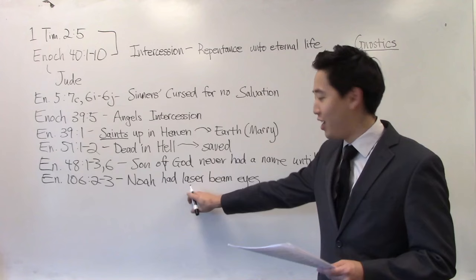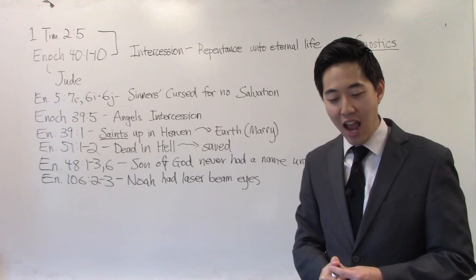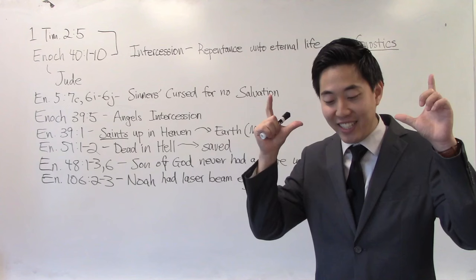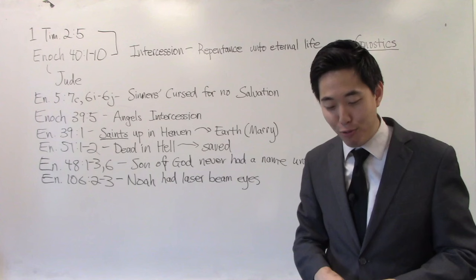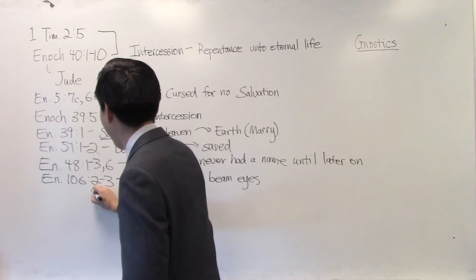His body, so when Noah was born, they're describing him in this way. His body was white as snow and red as the blooming of a rose and the hair of his head and his long locks were white as wool and his eyes beautiful. And when he opened his eyes, he lighted up the whole house like the sun and the whole house was very bright. And thereupon he arose in the hands of the midwife, opened his mouth and conversed with the Lord of righteousness. Pastor, you're exaggerating right here. Let's keep reading. Keep reading down to verse 4 through 6. I'm not exaggerating.